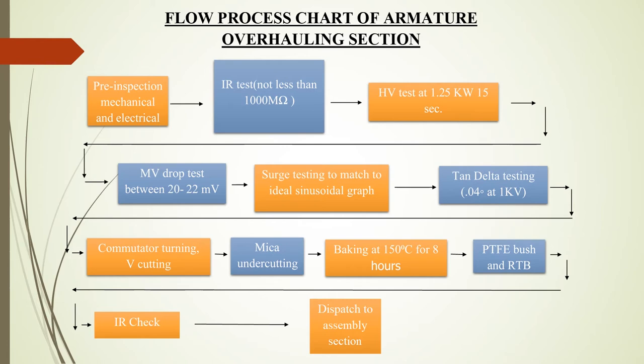Commutator turning is done to maintain a uniform gap between copper segments and carbon brushes. Commutator V-cutting is done at 45 degrees to avoid wear of carbon brushes. Chamfering and mica undercutting is done using a machine along the mica slot, with a U-cutting range of 1.25 to 1.50 mm. Baking is done at 150 degrees Celsius for 6 to 8 hours in an oven, followed by varnishing with F93 and S71. The PTFE bush and RTB sealant are fitted to prevent carbon particles from entering the gap between the cap and the commutator. Finally, a final IR test is done and the armature is dispatched to the assembly section.